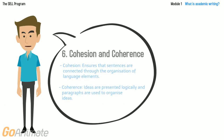Cohesion ensures that sentences are connected through the organization of language elements, whereas with coherence, ideas are presented logically and paragraphs are used.